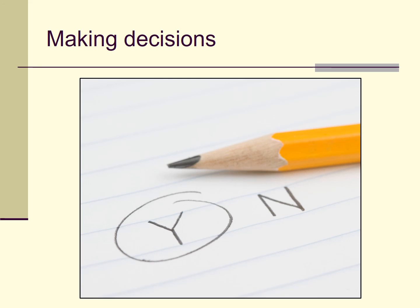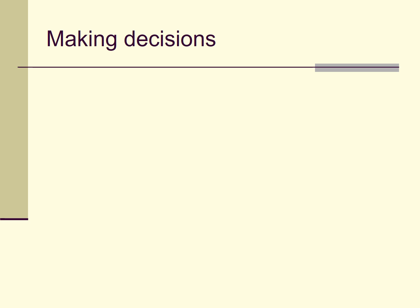Just to orient us: we're in situations where we're using tests to make particular decisions. This isn't all uses of tests — sometimes we're trying to measure a continuous outcome, like someone's level of depression, neuroticism, or creativity. But in other situations, we're trying to use test results to make an important decision, like does the person have depression — yes or no — is the person neurotic — yes or no — and so on.